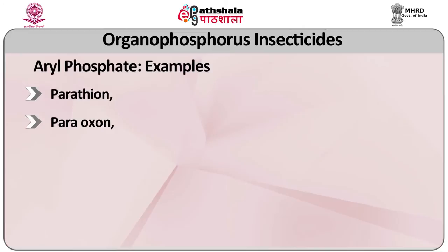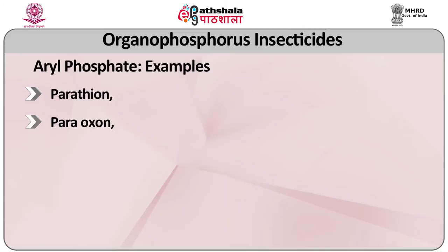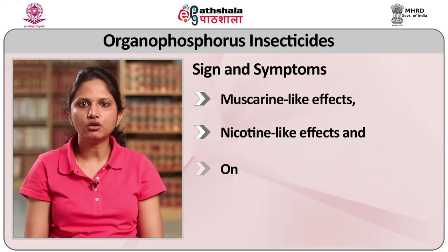While parathion, peroxone, methyl parathion, chlorothion, diazinon, etc. belong to the aryl phosphate group. What is the mechanism of action of organophosphorus insecticides? Poisoning can occur from inhalation, ingestion and absorption through skin. These compounds are powerful inhibitors of cholinesterase, and hence reduce its activity, resulting in accumulation of acetylcholine at nerve endings. Acetylcholine is a neurotransmitter; due to its accumulation, it results in hyperexcitation of the voluntary and involuntary muscles. Symptoms of organophosphorus insecticide poisoning have been described in three different effects: muscarinic-like effects, nicotinic-like effects, and effects on the central nervous system.